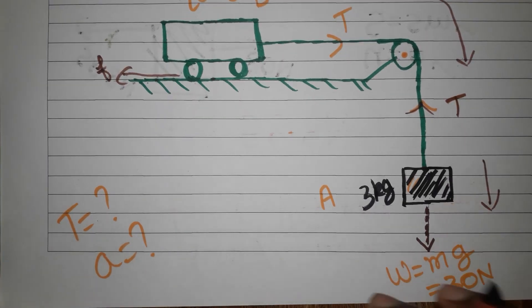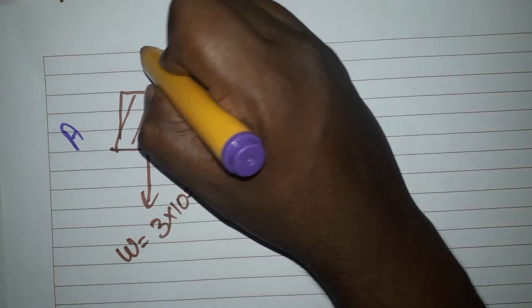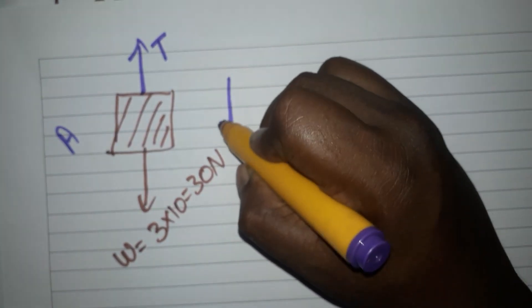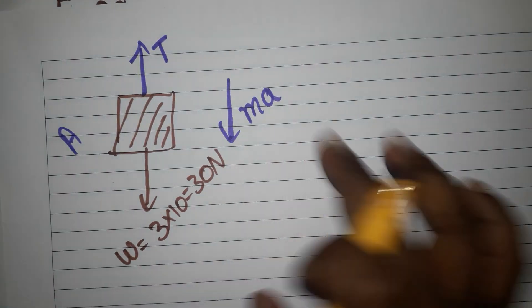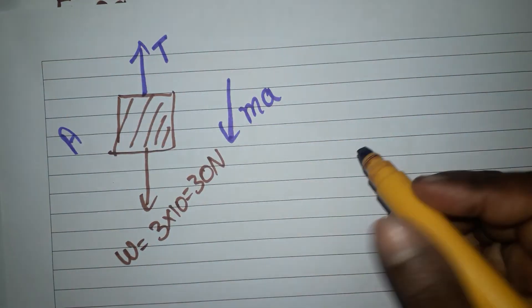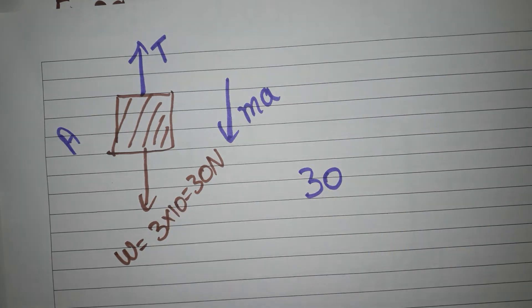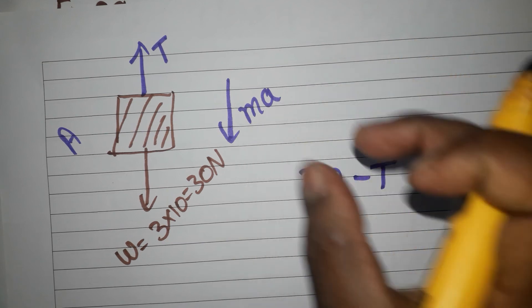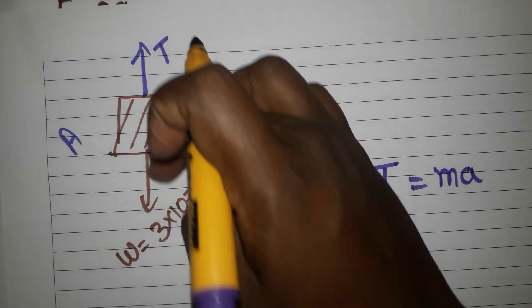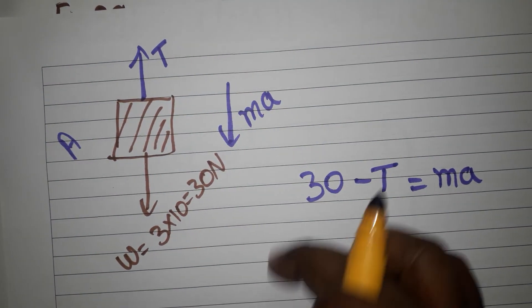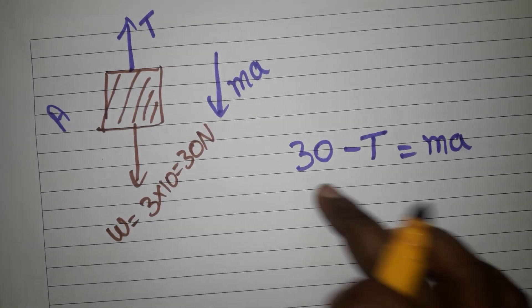Now taking only block A: weight Mg, M is 3 and G is 10, so 30 N acting downwards. Upwards is the tension force T. The whole system is moving downwards with acceleration Ma — 3 kg with acceleration. Which side is moving? Downwards first: 30 N. So, downwards minus upwards equals resultant: 30 minus T equals Ma. Downwards is written first because this side is moving and this is the greater value.